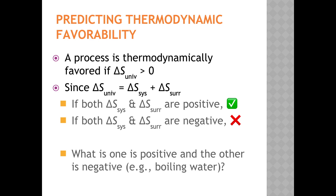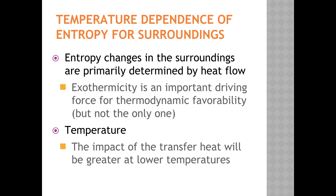But what if one change in entropy is positive and the other is negative, as with our vaporization of water example? To predict spontaneity we need to consider temperature. The entropy change for the surroundings is primarily determined by the flow of heat. The impact of that heat transfer is more important at lower temperatures than at higher temperatures. Therefore, whether a process is endothermic (negative delta S for surroundings) or exothermic (positive delta S for surroundings) matters more and more as temperature decreases.